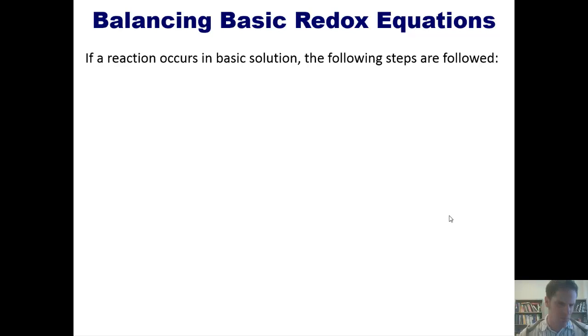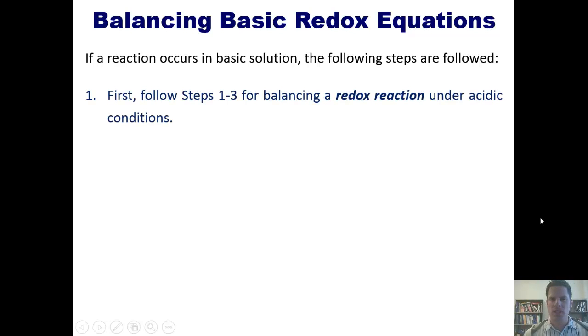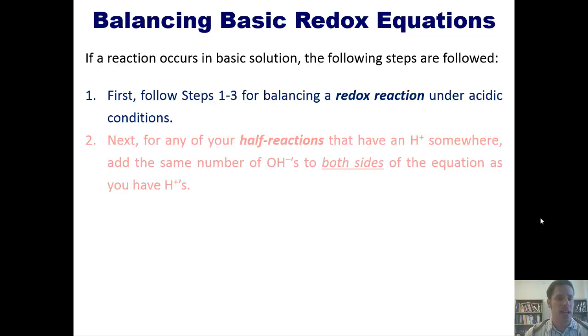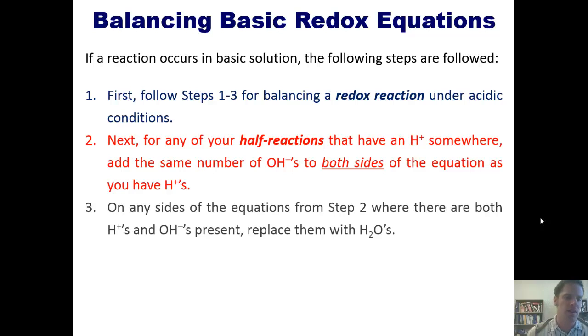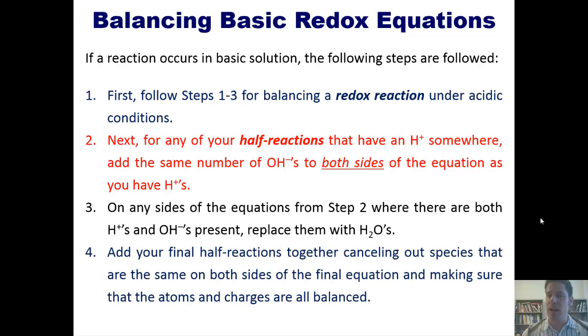First, follow steps one through three for balancing a redox reaction under acidic conditions. So those steps are pretty much exactly the same. Second, for any of your half-reactions that have an H⁺ somewhere, add the same number of OH⁻s to both sides of the equation as you have H⁺s. Third, on any sides of the equations from step two, where there are both H⁺s and OH⁻s present, just replace them or combine them together to turn them into H₂Os. And fourth, add your final half-reactions together, canceling out species that are the same on both sides of the final equation and making sure that the atoms and all charges are balanced.